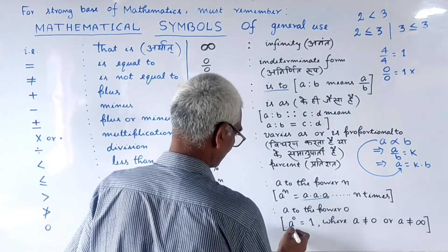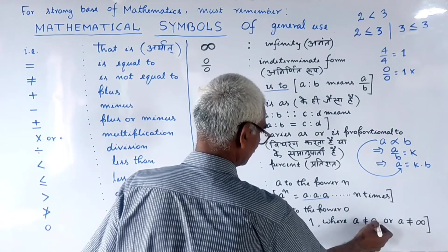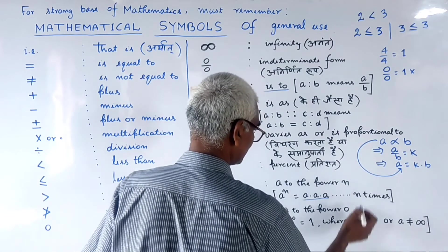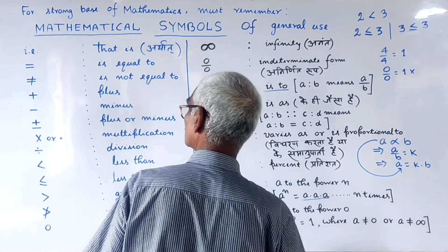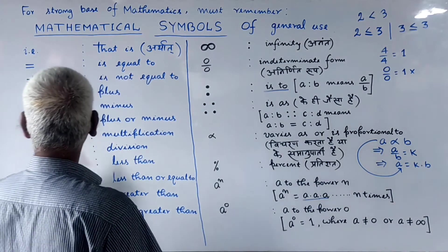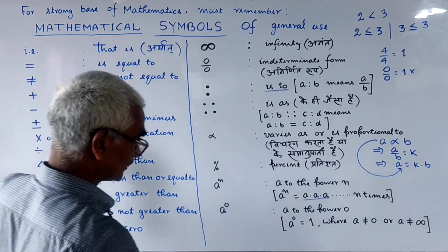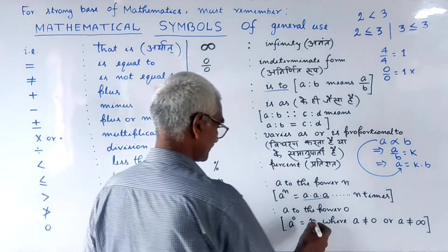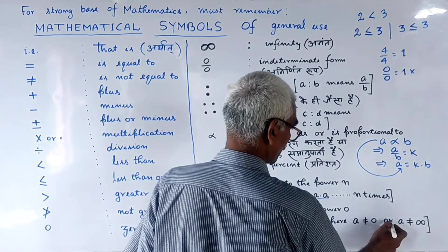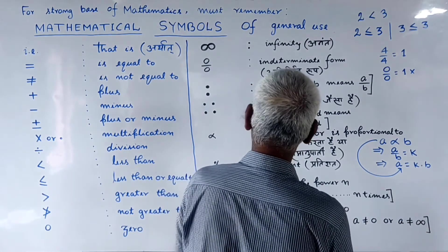The rule is that the base A should not be equal to 0, and A should not be equal to infinity. Where A is not equal to 0 and A is not equal to infinity.